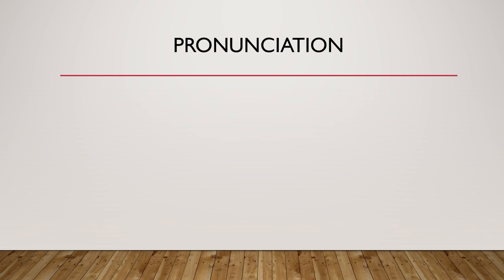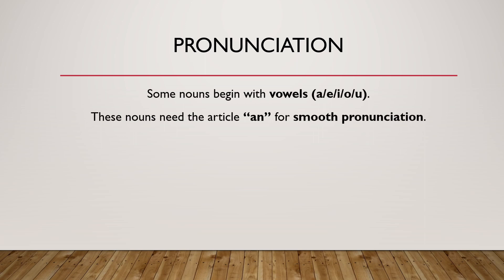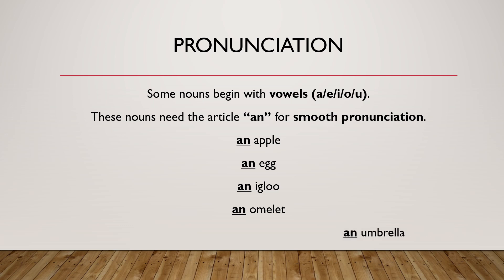Pronunciation. Some nouns begin with vowels: A, E, I, O, U. These nouns need the article an for smooth pronunciation — an apple, an egg, an igloo, an omelette, an umbrella. If I say 'a apple,' it doesn't sound smooth. So we use an for words like this.